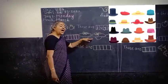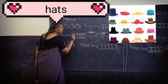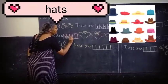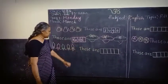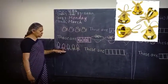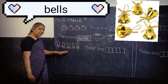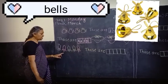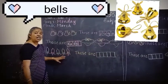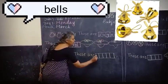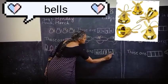See the next picture. Those are Hats. What is the spelling of Hats? H-A-T-S, Hats. Those are Hats. See this picture, children — I have written many bells. Let us count the bells: 1, 2, 3, 4, 5. So we have to use 'These are Bells.'